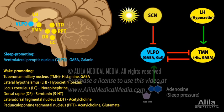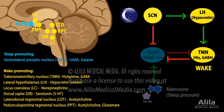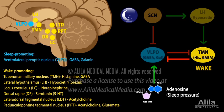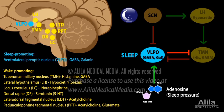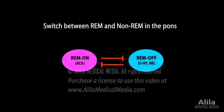During the day, the SCN inhibits the VLPO and stimulates hypocretin neurons, driving the switch towards the waking state. By the end of the day, when SCN activity is lowest and pressure to sleep is highest, the VLPO is activated and sleep is switched on. There is a similar switch between REM and non-REM sleep, mediated by mutually inhibiting REM-ON and REM-OFF neurons in the pons.